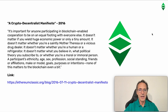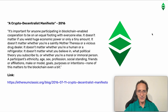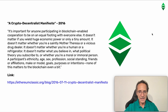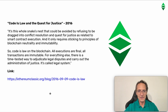The other document is A Crypto Decentralist Manifesto, also from 2016. It reads: 'It's important for anyone participating in blockchain-enabled cooperation to be on equal footing with everyone else. It doesn't matter if you wield huge economic power or only a tiny amount. It doesn't matter whether you're saintly Mother Teresa or a vicious drug dealer. It doesn't matter whether you're a human or a refrigerator' — referring to the Internet of Things. 'It doesn't matter what you believe in, what political theory you subscribe to, or whether you're a moral or immoral person. A participant's ethnicity, age, sex, profession, social standing, friends or affiliations, make or model, goals, purposes or intentions — none of this matters to the blockchain even a bit.' This reflects the core principles that Ethereum Classic has been built on.